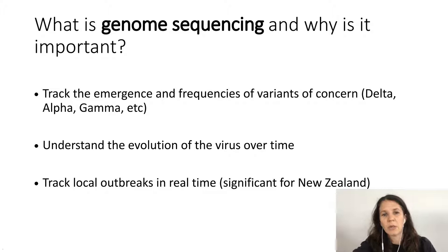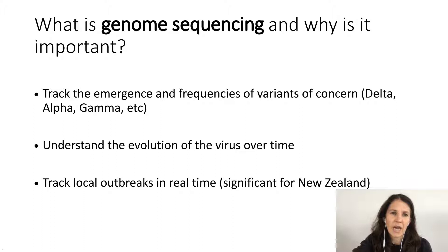Why do we sequence the genome? Why is that important? Well, it's important to track the emergence and the frequencies of these variants of concern. Delta has spread throughout the world. Sequencing the virus also allows us to understand how it evolves — what mechanisms of mutations are occurring, things like that.